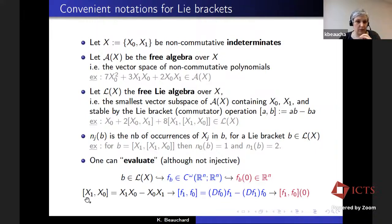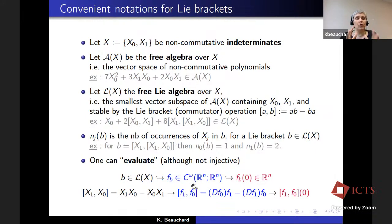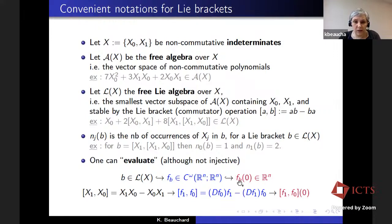I will call f subscript b the vector field that you associate with b by replacing X0 by F0 and X1 by F1. For instance, if b is the bracket [X1, X0], then fb is [F1, F0]. Once you have a vector field, you can evaluate it on zero and get a vector. I will use many times this notation f subscript b of zero where b is an element of the free Lie algebra.